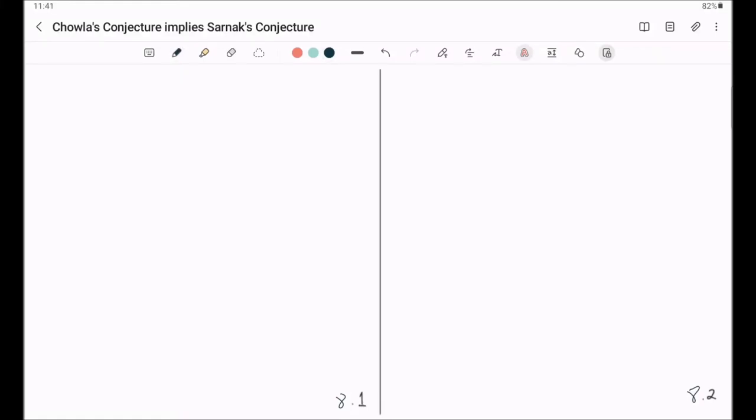Now let us start with the proof that Chowla's conjecture implies Sarnak's conjecture. First, we will state and prove a corollary to Chowla's conjecture.